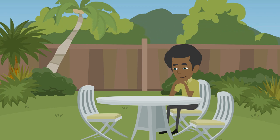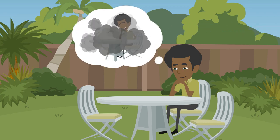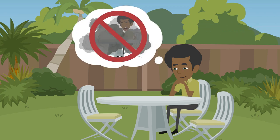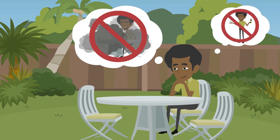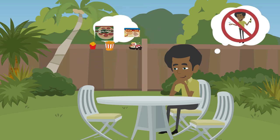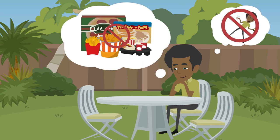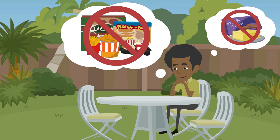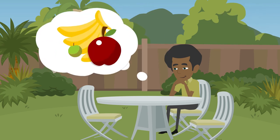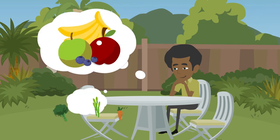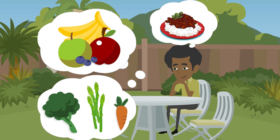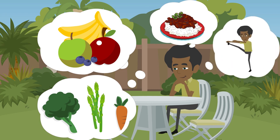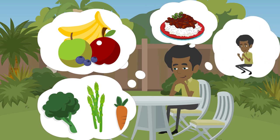Get your body in the best shape possible by making healthy lifestyle changes such as quitting smoking, not abusing drugs or alcohol, avoiding processed foods, excess fats and sugar, eating more fruits, vegetables, beans and whole grains, and being physically active.